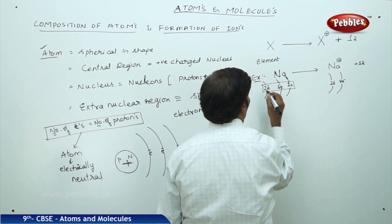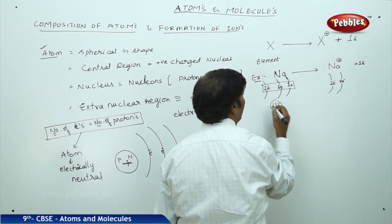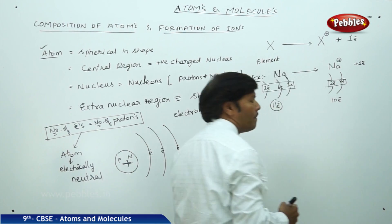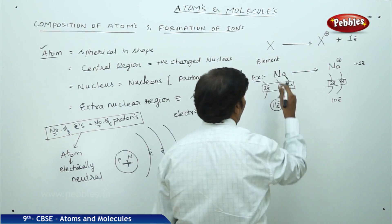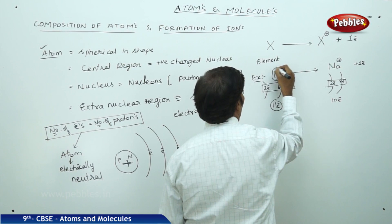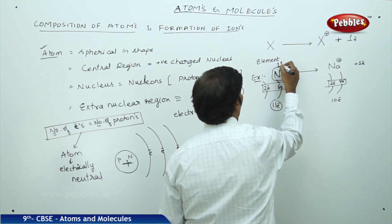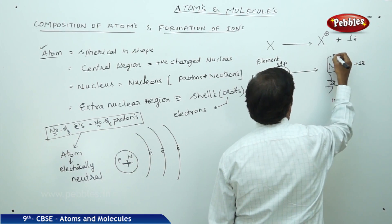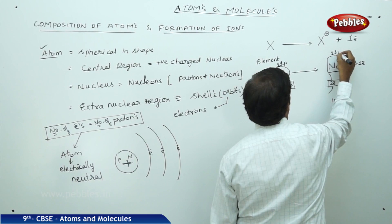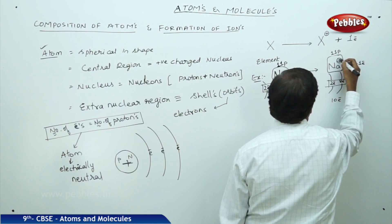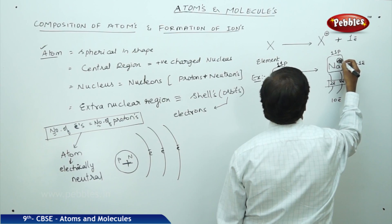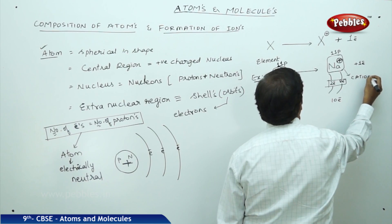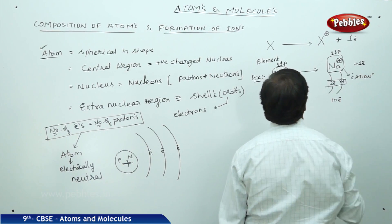The total number of electrons in neutral sodium is 11, but after loss of one electron it has only 10 electrons. Importantly, sodium contains 11 protons whether neutral or ionized. The Na+ ion still contains 11 protons but only 10 electrons. This positively charged species is called the sodium cation.